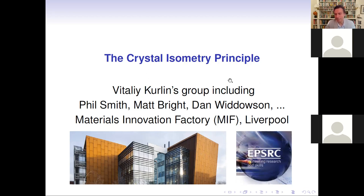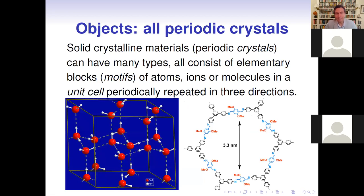Let me first explain some key concepts. We consider all solid crystalline materials, which we will briefly call periodic crystals or simply crystals. They consist of elementary blocks — motifs of atoms or molecules — in a unit cell periodically repeated in three directions. These unit cells are not necessarily cubes; they can be rather different. We cover all inorganic crystals as well, but at the moment we focus on periodic crystals.